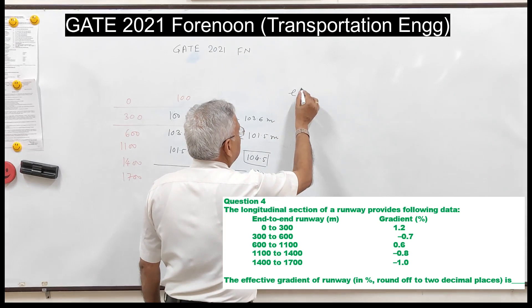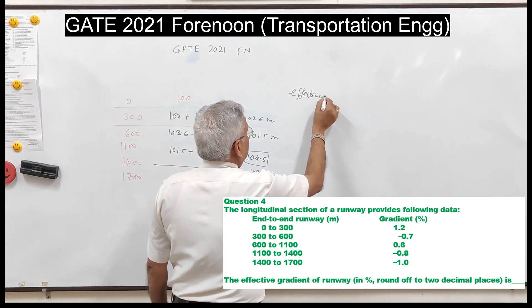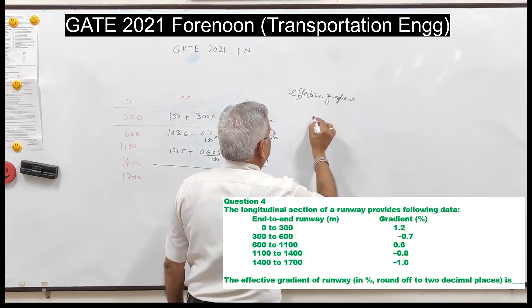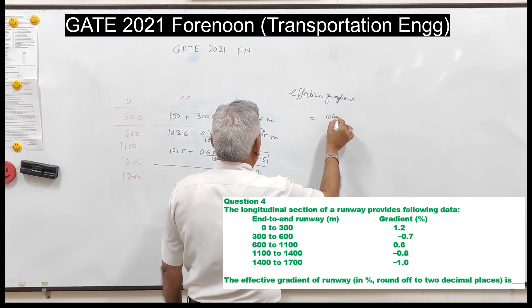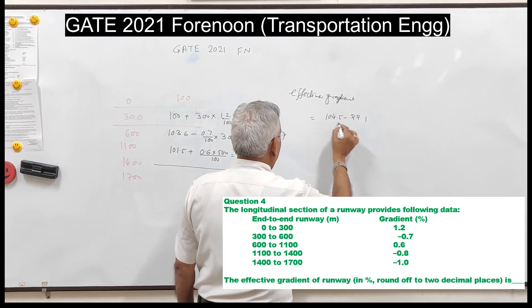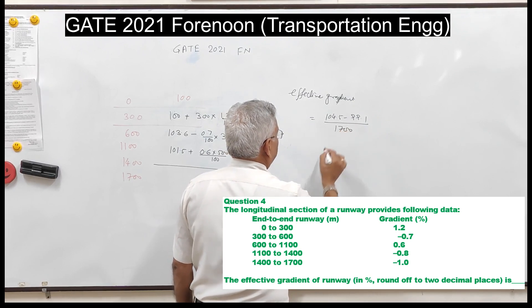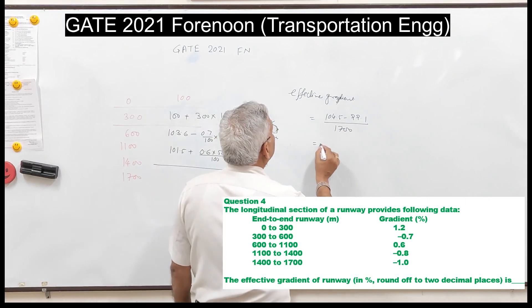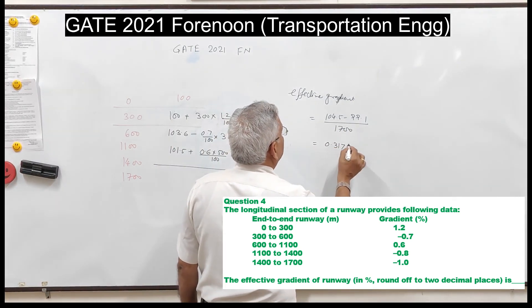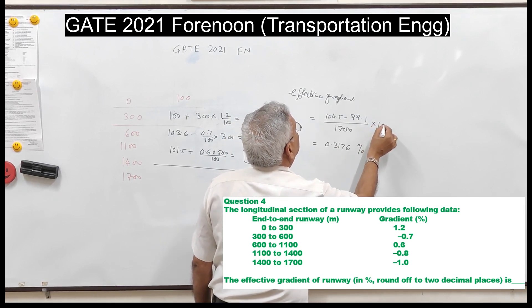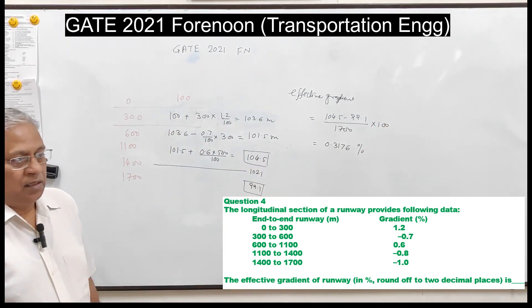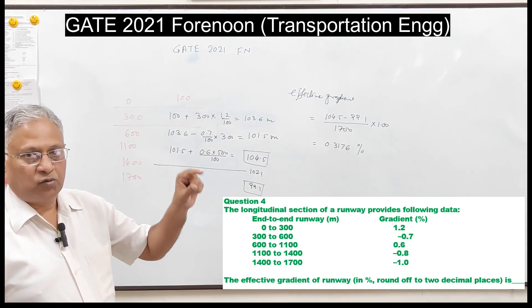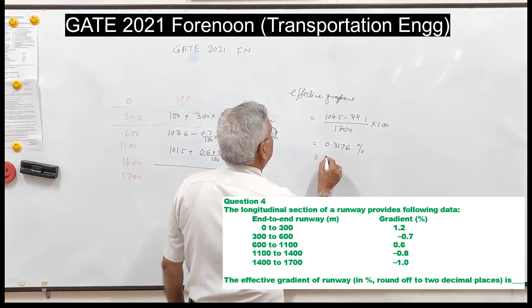Effective gradient = (104.5 − 99.1) / 1700 × 100 = 0.3176%. Rounded to two decimal places, the effective gradient is 0.32%.